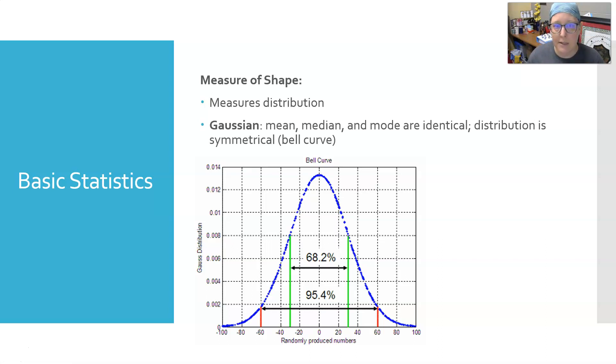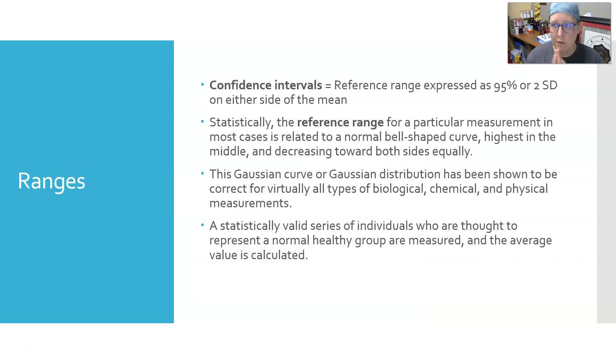Some other basic statistics: how we determine ranges, whether that is a reference range or a quality control range. We use the 95% confidence interval, which is the mean plus or minus two standard deviations. If we say the normal range for glucose is 80 to 100, we are confident that if we draw blood from 100 people considered normal, 95 of them will fall exactly between 80 and 100, and 5% could fall slightly above or slightly below.